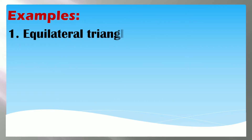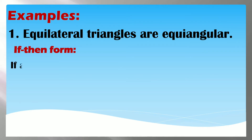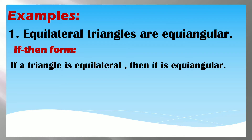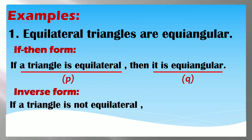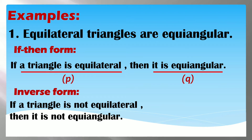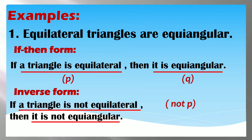Try natin sa examples. 'Equilateral triangles are equiangular.' Ang if-then form: if a triangle is equilateral, then it is equiangular. Ito yung ating hypothesis, ito yung ating conclusion. Dahil inverse form ang pinag-uusapan, i-co-contradict lang natin — maglalagay lang tayo ng word na 'not.' So: if a triangle is not equilateral, then it is not equiangular. Ito yung not P, and ito yung not Q.